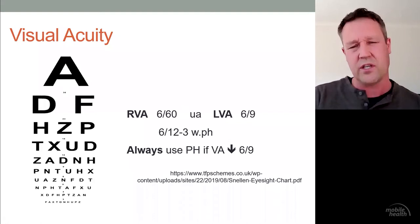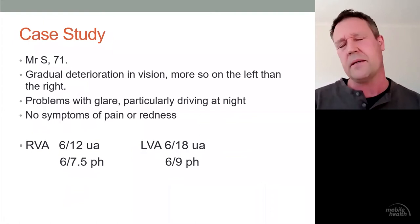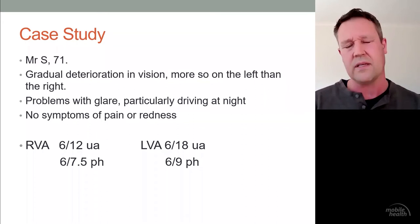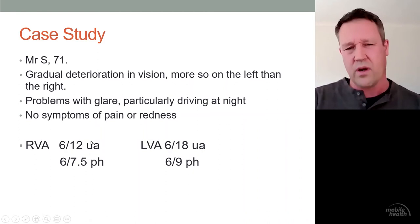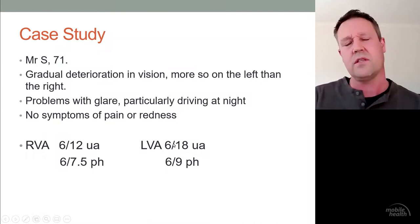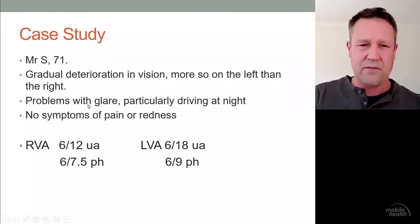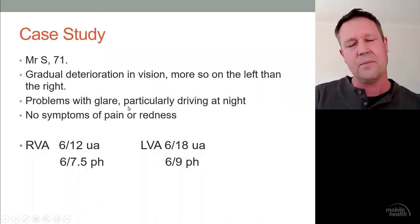The first case study is Mr. S, a 71-year-old man who's had gradual deterioration in vision, more so on the left eye. He gets problems with glare, particularly while driving at night, but has no pain or redness. His unaided vision is 6/12 on the right eye, which pinholes up to 6/7.5, and 6/18 on the left, pinholes to 6/9. He doesn't wear glasses, his vision does improve, so the retina is probably working okay. Given his age, gradual vision deterioration, and glare, you'd probably start thinking this is related to a cataract.